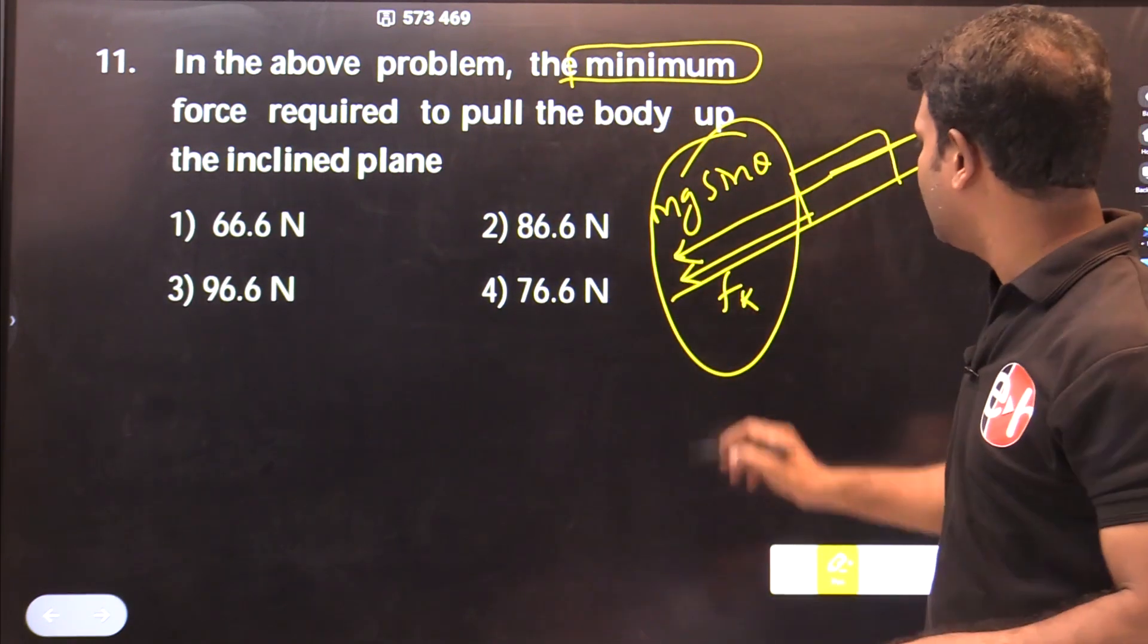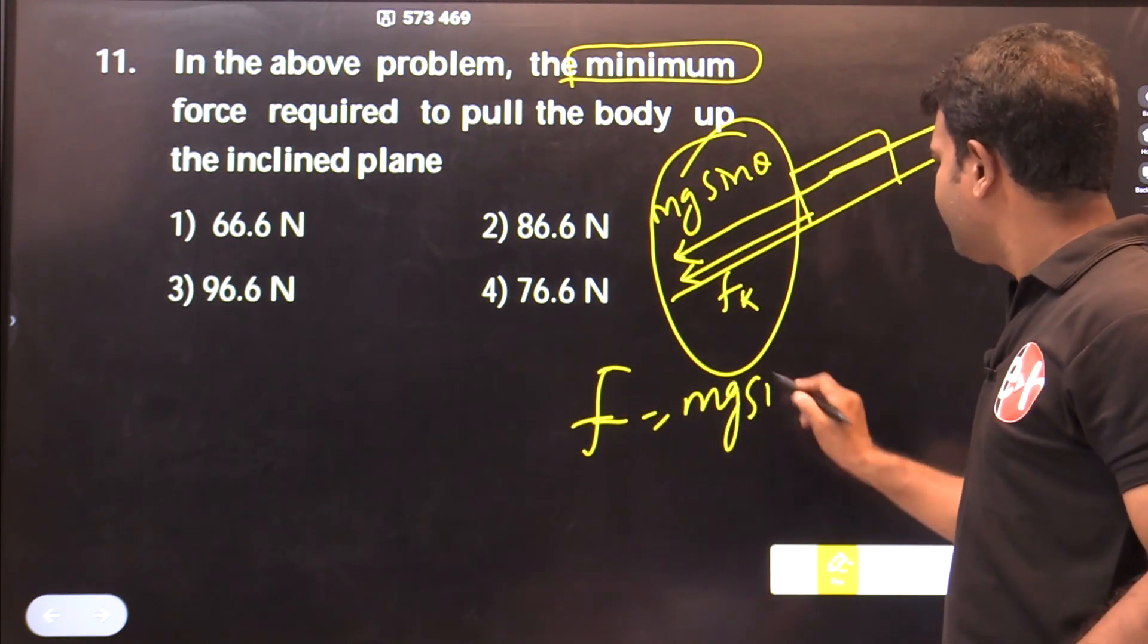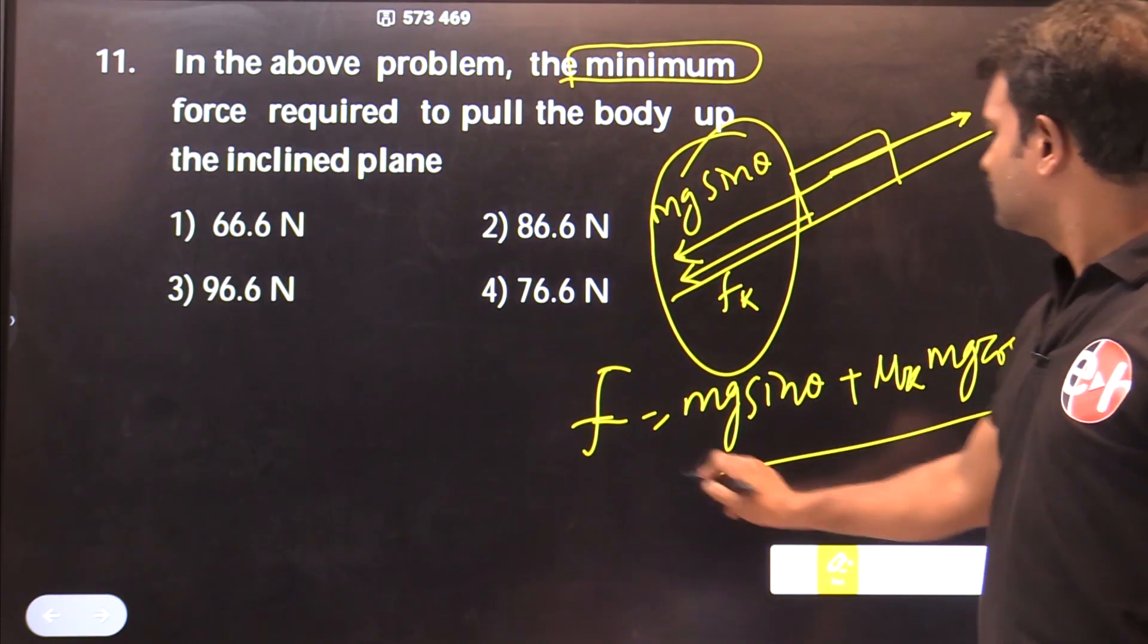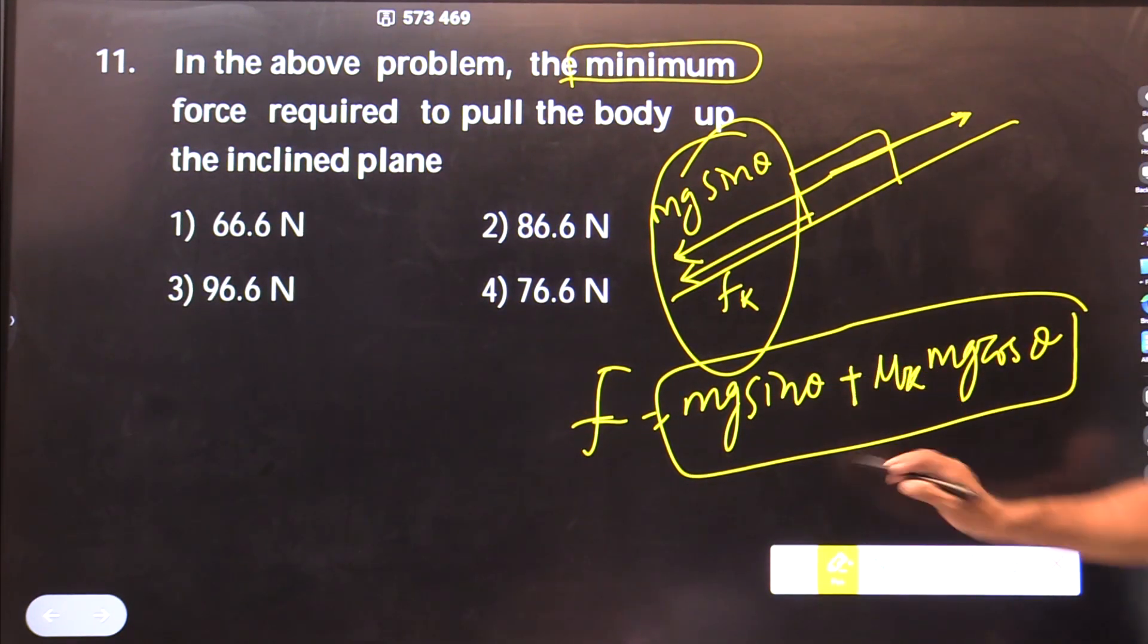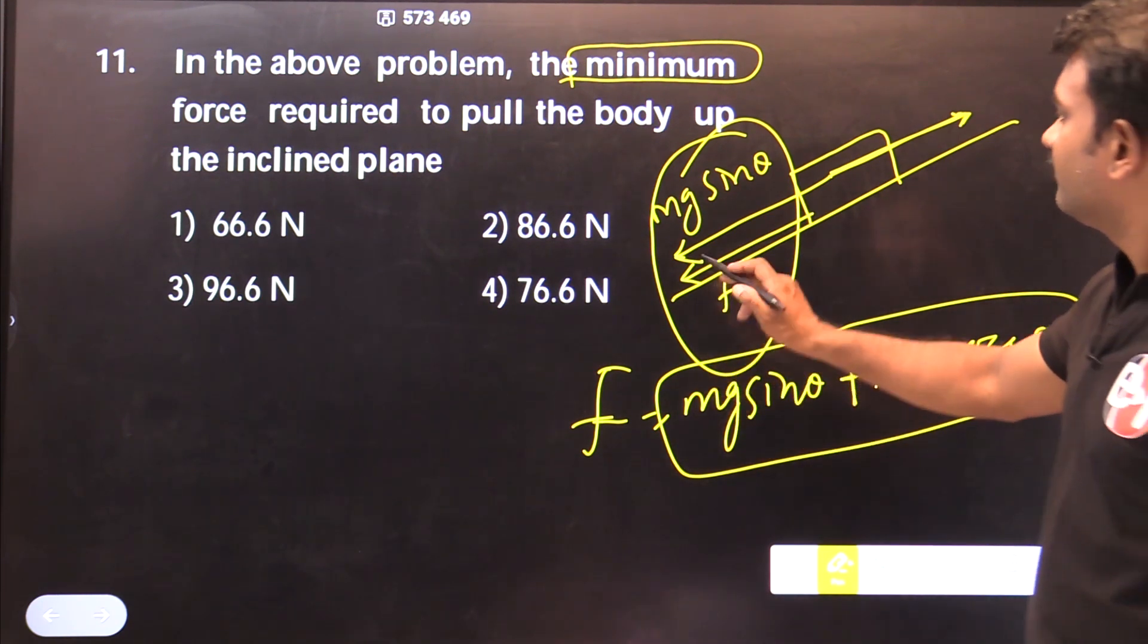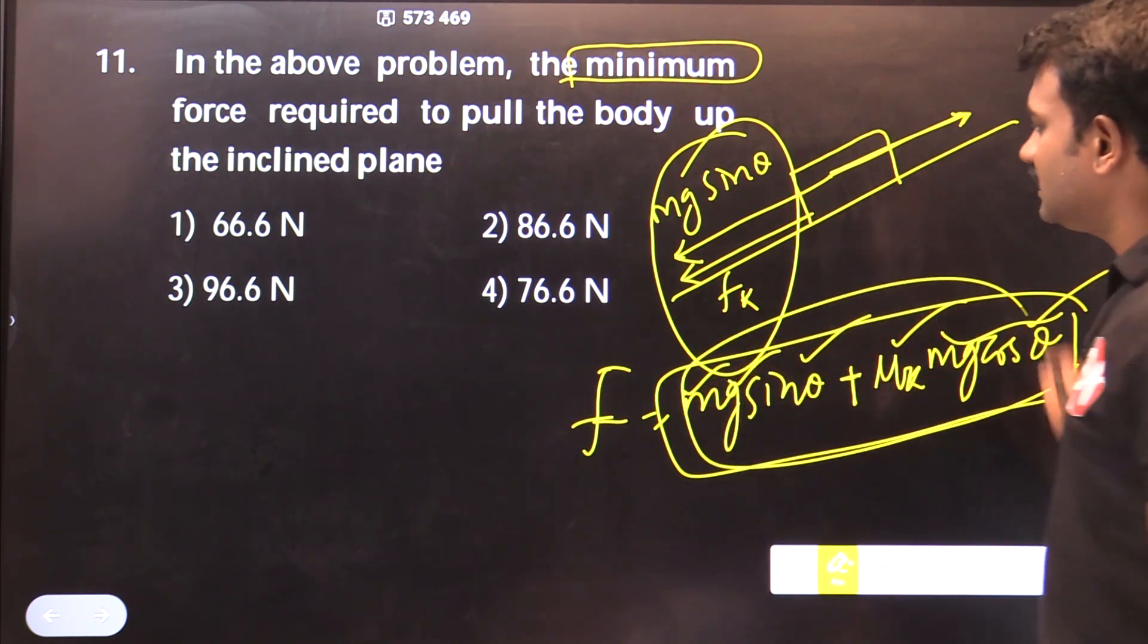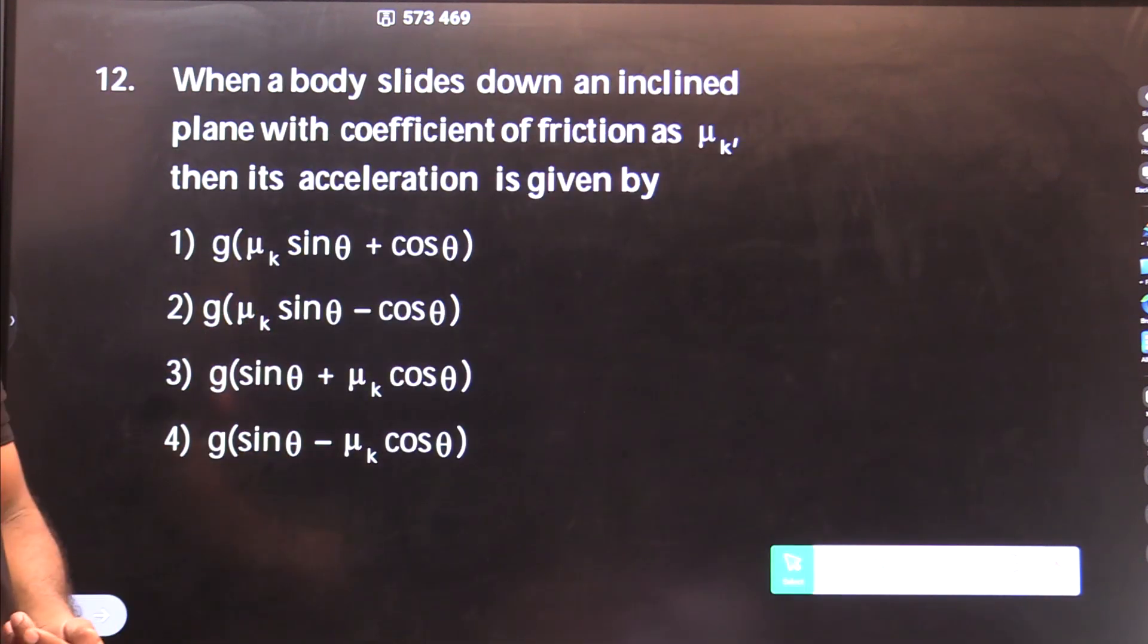What is the minimum force required? F equals mg sine theta plus mu k mg cos theta. Substitute the values: m, g, sine theta, mu k, mg cos theta, simplify and you will get the answer.